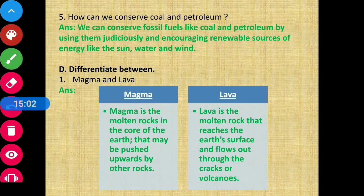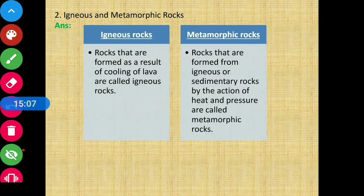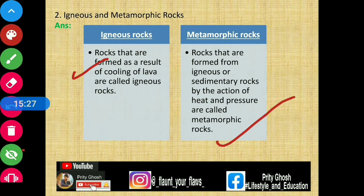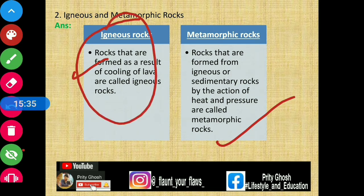Next: Igneous rocks vs Metamorphic rocks. Igneous rocks are formed as a result of cooling of lava. Metamorphic rocks are formed from igneous or sedimentary rocks by the action of heat and pressure. So rocks formed by lava cooling are igneous rocks, while metamorphic rocks are formed from igneous or sedimentary rocks by applying heat and pressure.